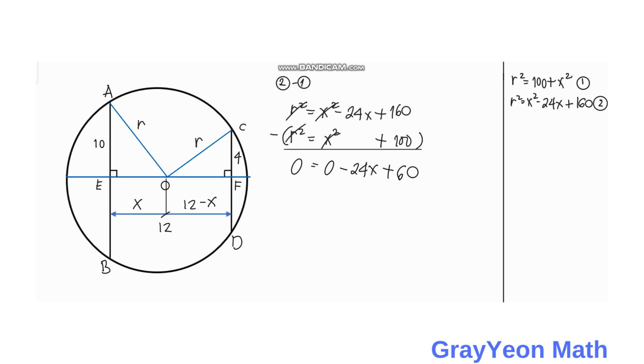So simplifying further we have 24X is equal to 60, and X is equal to 60 over 24. If we divide this by 12, the numerator and the denominator, we have 5 and the denominator we have 2, so X is equal to 5 over 2.